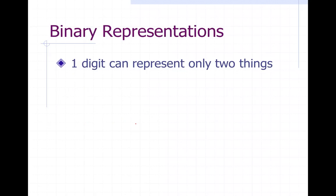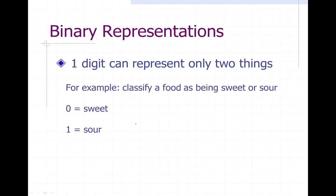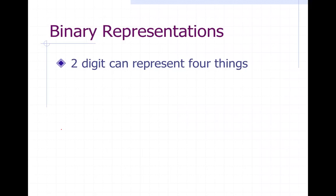Before we talk about those, first: one digit can represent two things and only two things. For example, let's classify food as sweet or sour — zero can represent sweet, one can represent sour. So with just zero and one I can make that representation. Now two digits can represent four things.